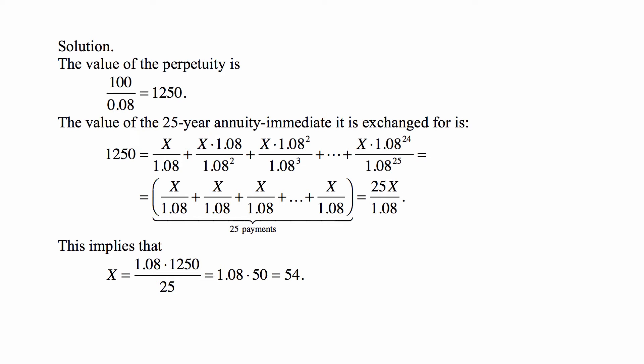The value of the 25-year annuity immediate is 1,250 since it's exchanged for the perpetuity. We can write this as the present value of its payments: the first payment is X/1.08, the next is X·1.08/1.08², the third is X·1.08²/1.08³, and so on until the last payment, which is X·1.08²⁴/1.08²⁵.